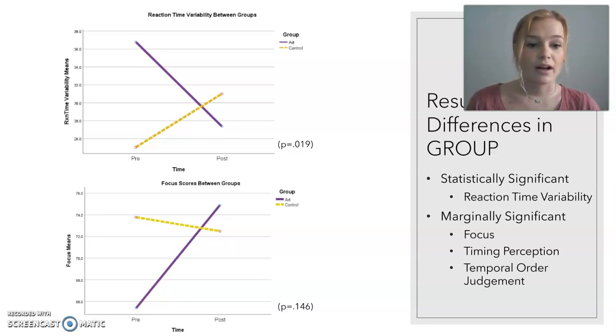I also found marginally significant differences in timing perception, and timing perception shows how well your brain keeps track of time by testing the integrity of neural connections between the cerebellum and the cerebral cortex. So, significant scores in that means that there's a continuity or an increase in cerebellar functioning and motor learning.